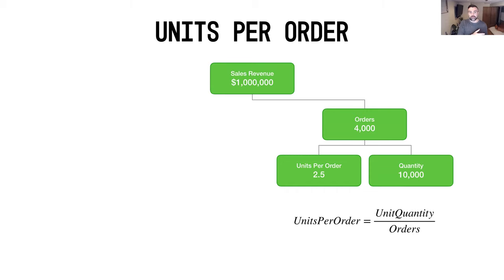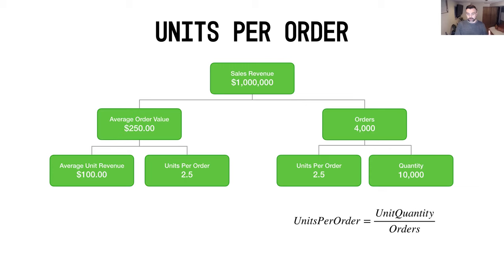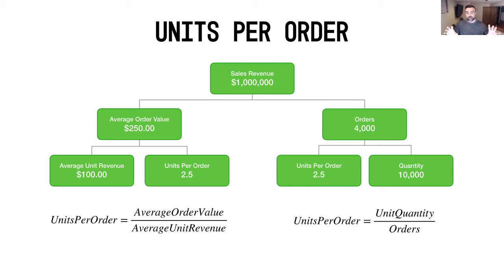The other way you can look at it is on the other side of the product margin tree: if you take your average order value and divide by your average unit revenue — $250 divided by $100 — you get the same 2.5, which can be called your average quantity or average units per order. So you can see how the math works either way, and we're going to look at both scenarios and see how it influences both sides of the equation.